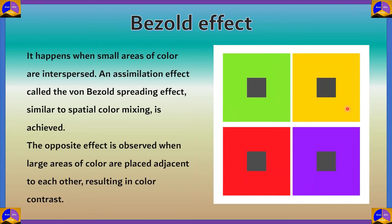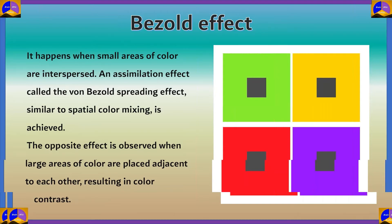However, the opposite effect is also observed when large areas of color are placed adjacent to each other. In that kind of image, what we get is color contrast. In the earlier picture it was color mixing; here we get color contrast.